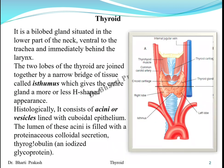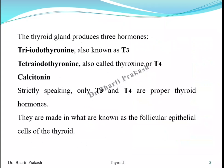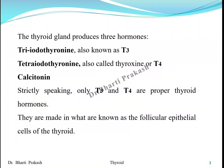Histologically, it consists of acini or vesicles which are lined with cuboidal epithelium. The lumen of these acini is filled with the proteinaceous colloidal secretion thyroglobulin. The thyroid gland produces three hormones: T3, which is triiodothyronine; T4, which is tetraiodothyronine or thyroxine; and calcitonin. Strictly speaking, T3 and T4 are the proper thyroid hormones, made in the follicular epithelial cells of the thyroid.